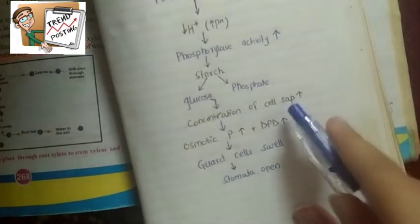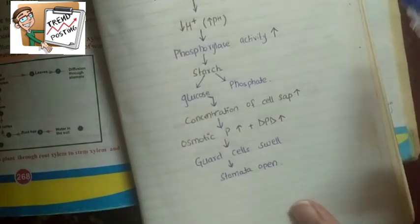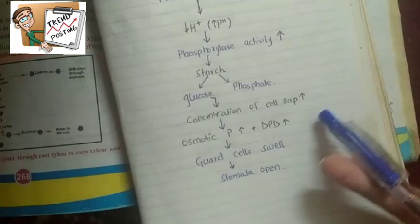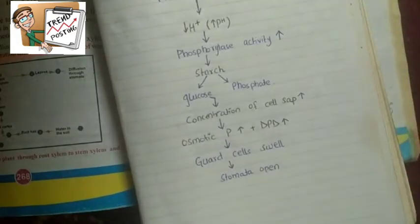Glucose increases, so concentration of cell sap increases. When concentration increases, osmotic pressure increases, and diffusion pressure deficit also increases. This causes guard cells to swell and stomata open.